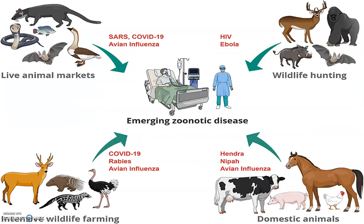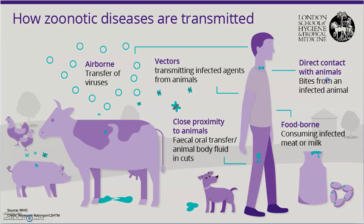These are the emerging zoonotic diseases, and zoonotic diseases will be upgrading their versions. Live animal markets mainly give us SARS, COVID-19, and avian influenza. COVID-19, rabies, avian influenza, Hendra, and Nipah are from domestic animals. HIV and Ebola are from wildlife hunting and poaching.